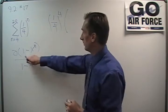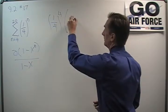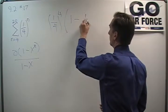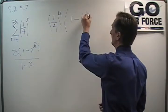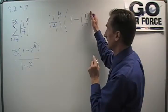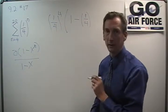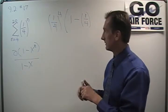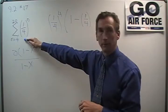And now I've got 1 minus x to the n. 1 minus 1 fourth raised to the... Now, don't be tempted to put a 20 in there. Remember that n is the number of terms in my series. So, how many do we have?